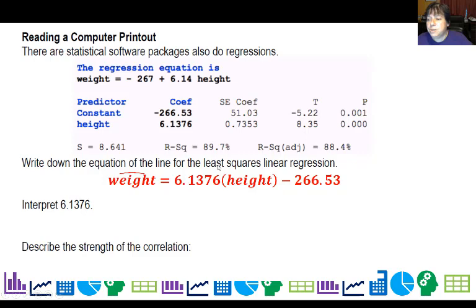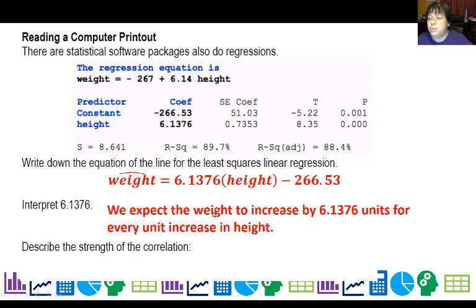Now they want me to interpret this number. Well, this is marginal change. So however, every time height changes by one unit, weight's going to change by that many units. So we expect the weight to increase by 6.1376 units for every unit increase in height.